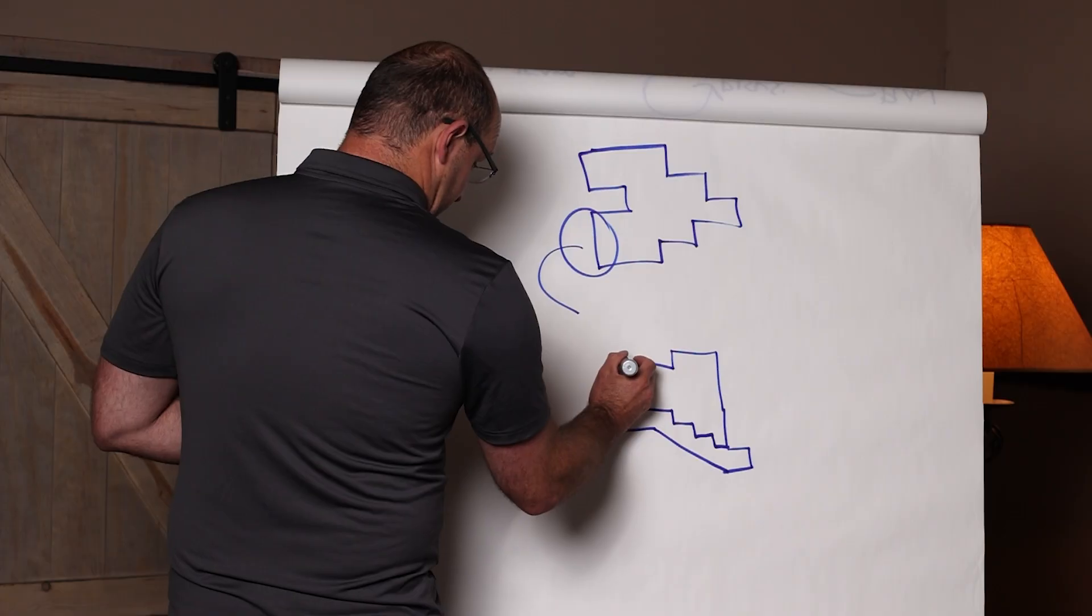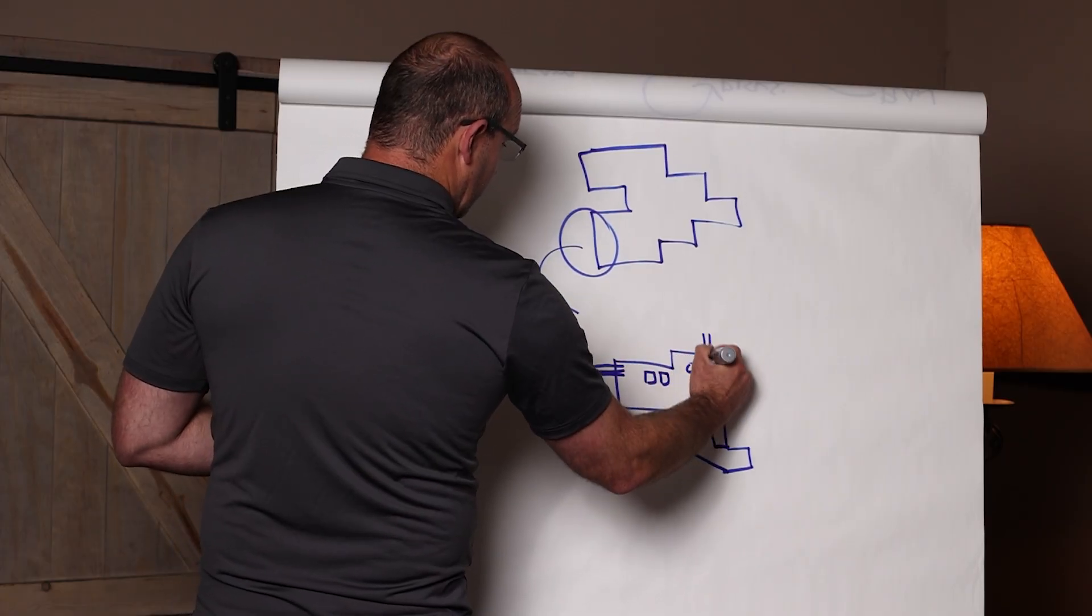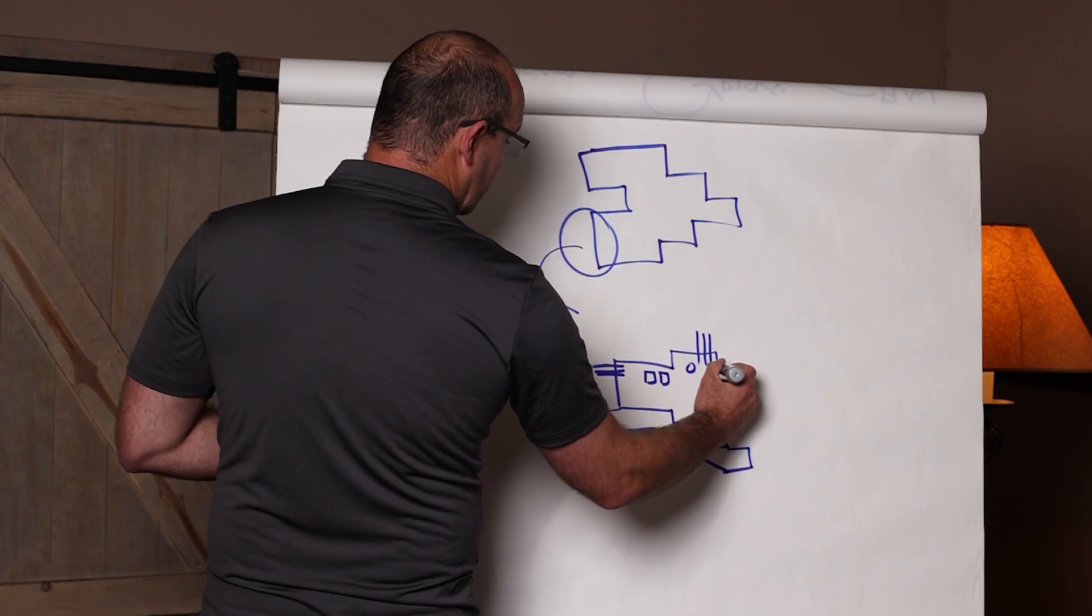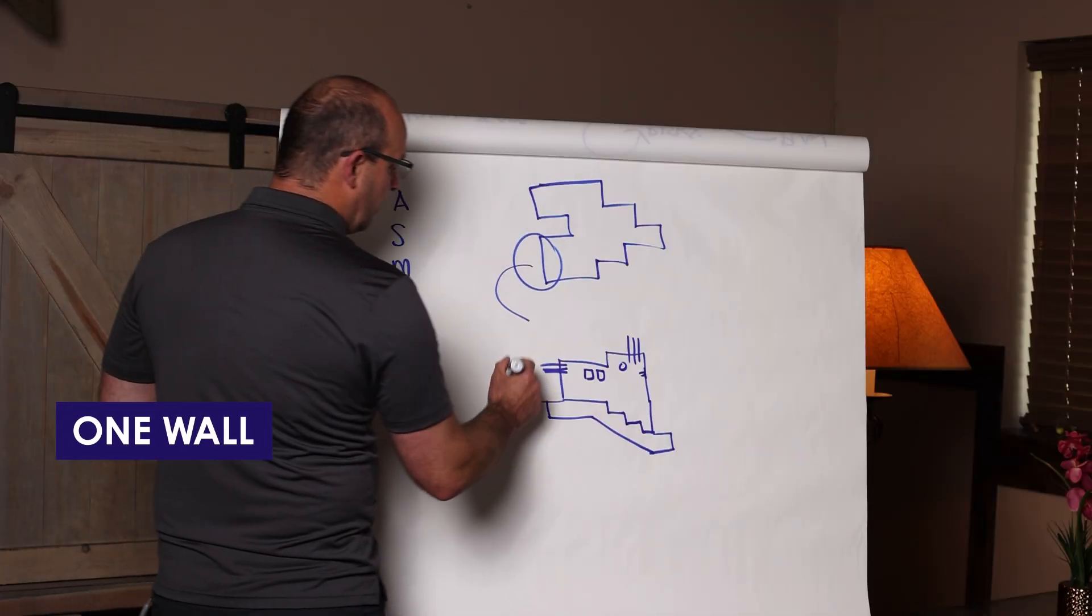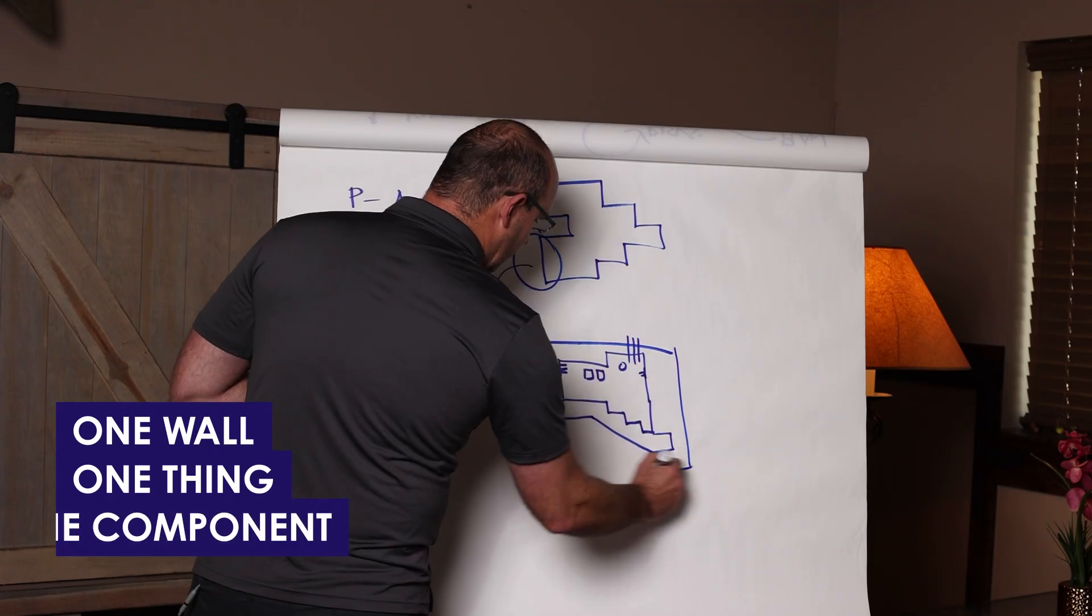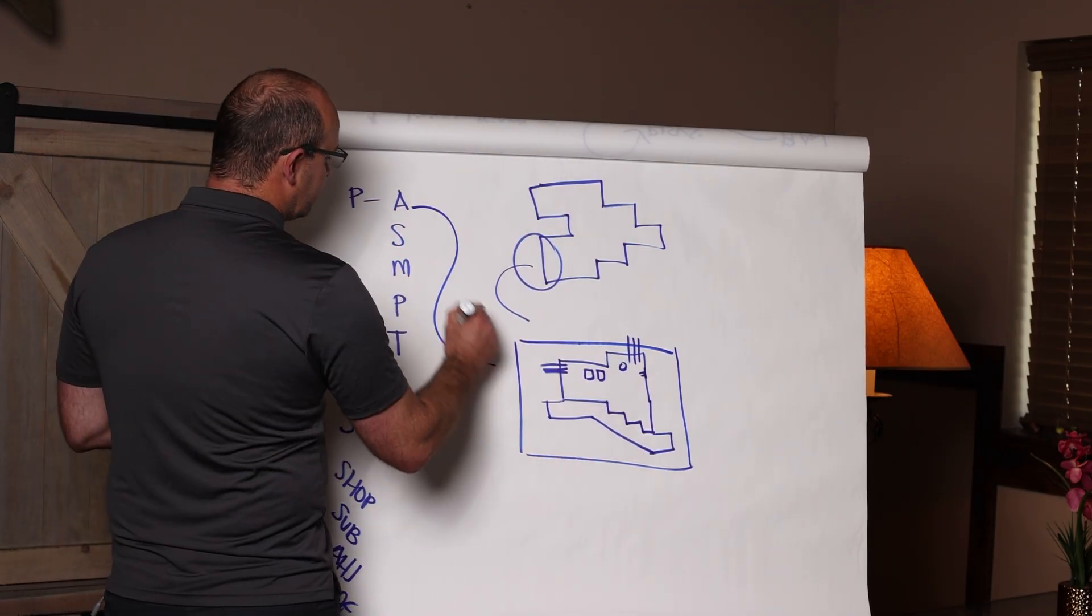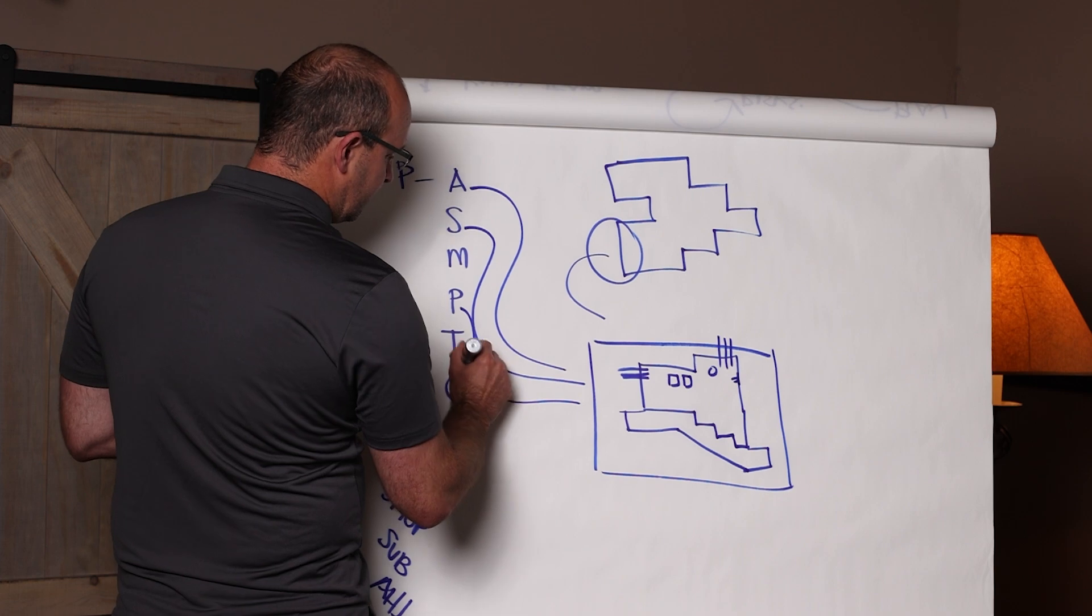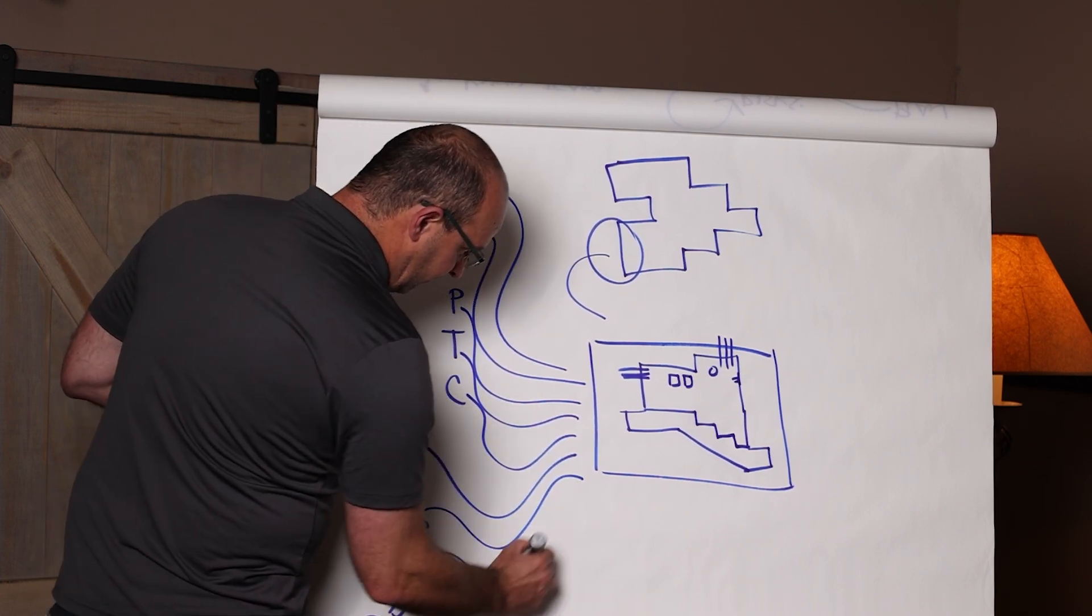I don't know how the footing would look. Typically it steps, but maybe there's reinforcing coming out, some embeds and opening, maybe some reinforcing coming out the side, whatever the case may be. Maybe there's another embed. That one wall, that one thing, that one component, you're going to go build. A lift drawing lifts the information from all these drawing sets and puts it in one location for you to build.